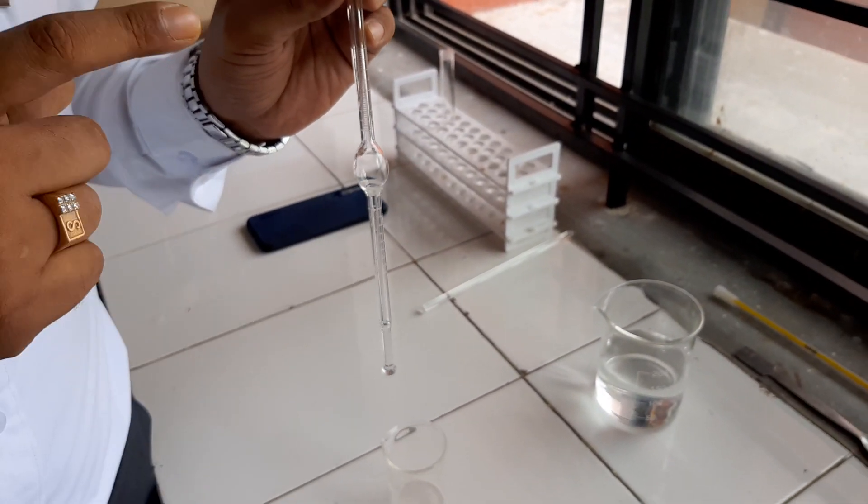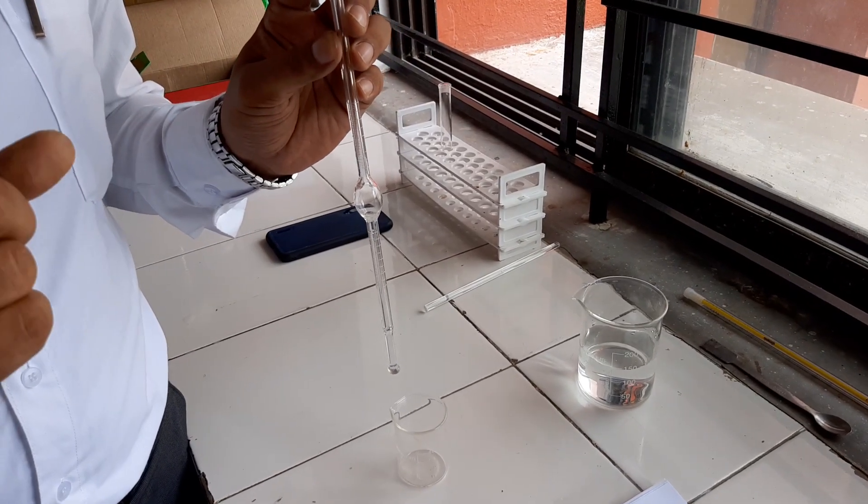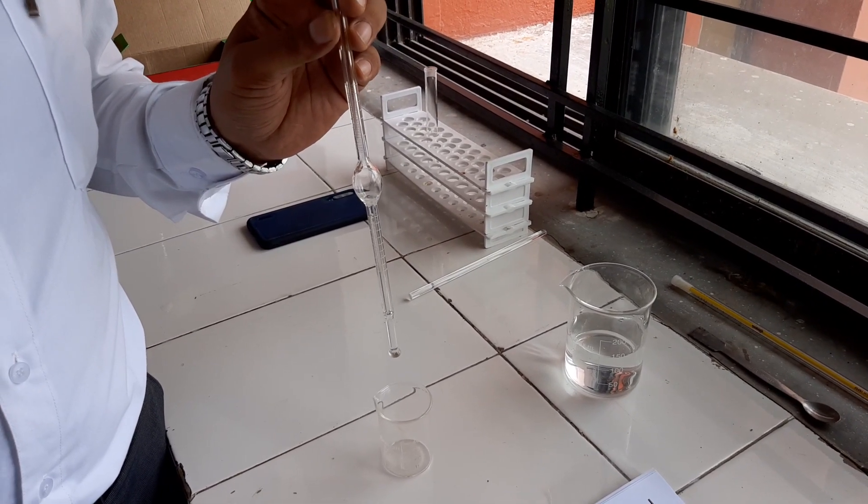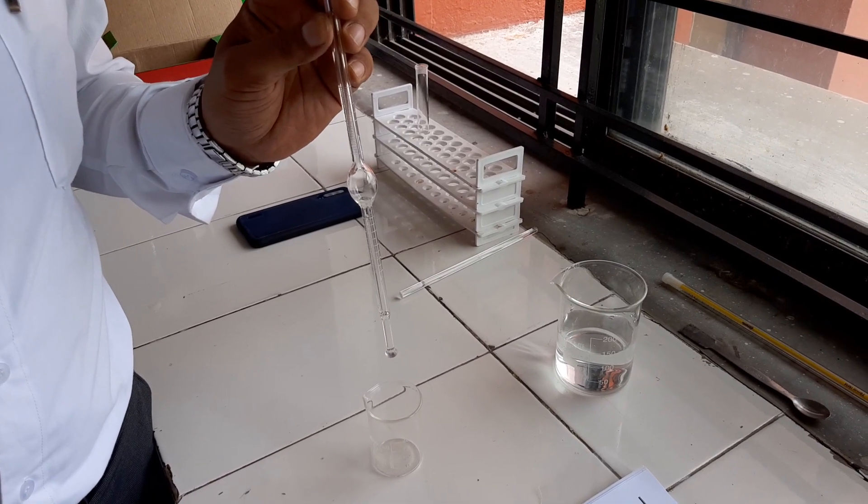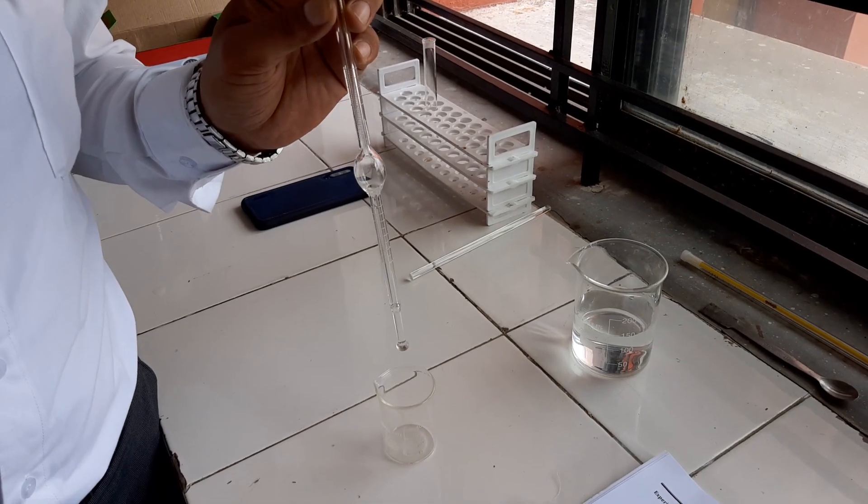So, in drop weight method, you have to take the total weight of drops. In drop count method, you have counted the number of drops. But here, you have to take the weight of liquid.